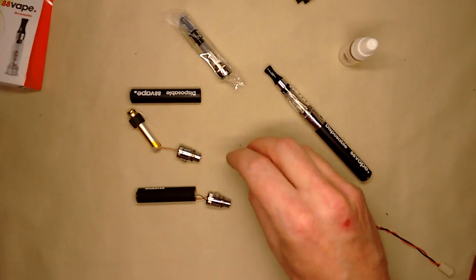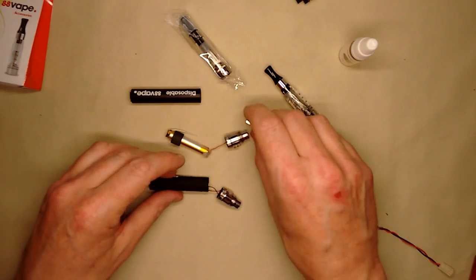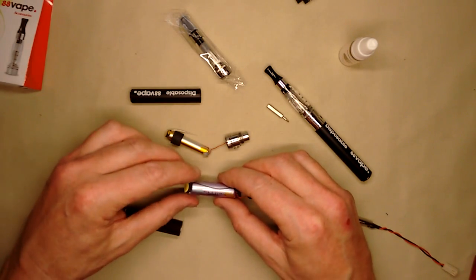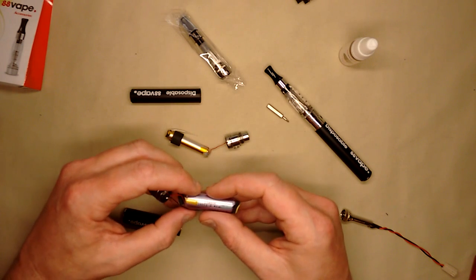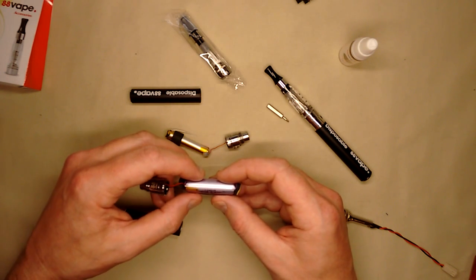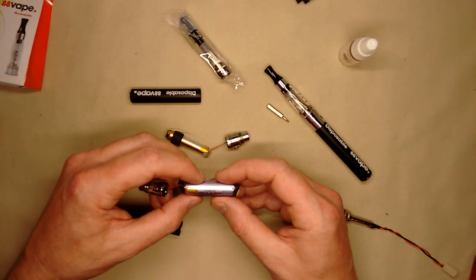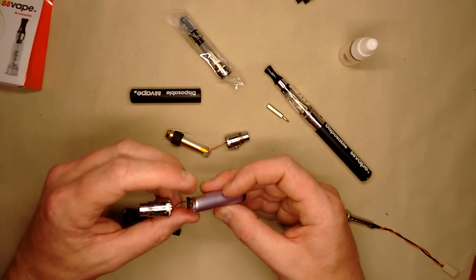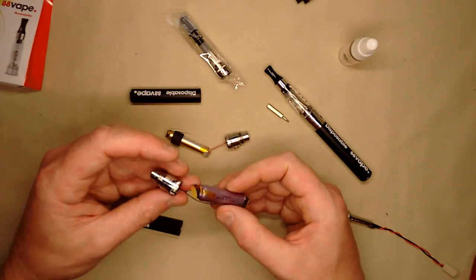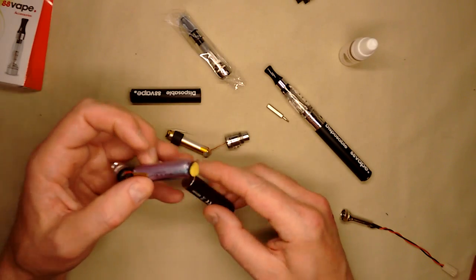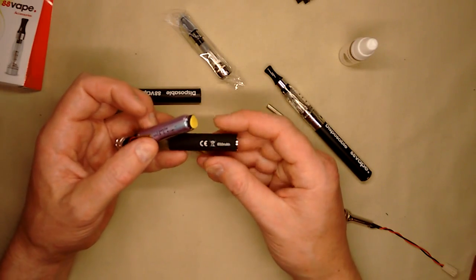For comparison, here's the rechargeable one. It's got a fat cell inside. What they call a 13450, which means it's 13 millimeters diameter by 45 millimeters long. It says 2.41 watt hour. I've not tested this one. This is supposed to be 650 milliamp hour capacity.